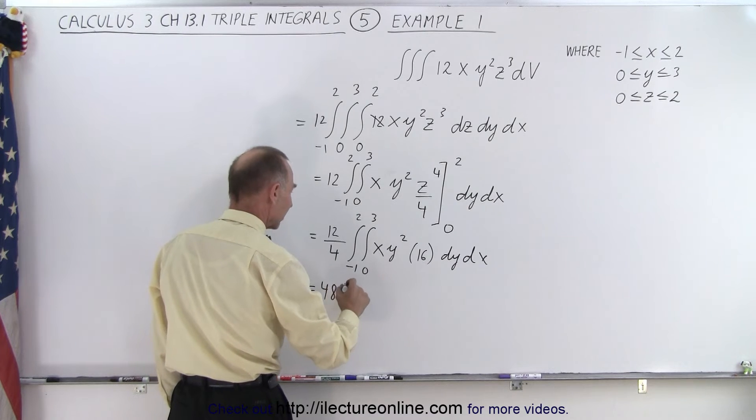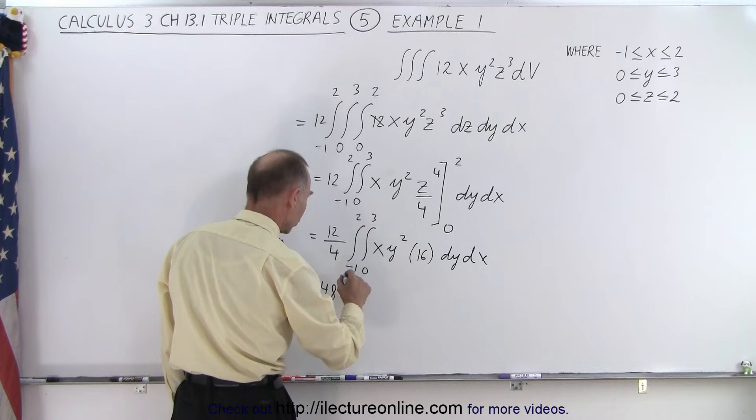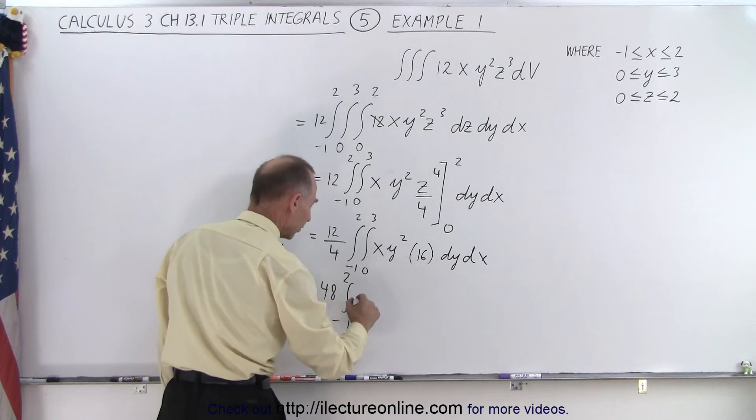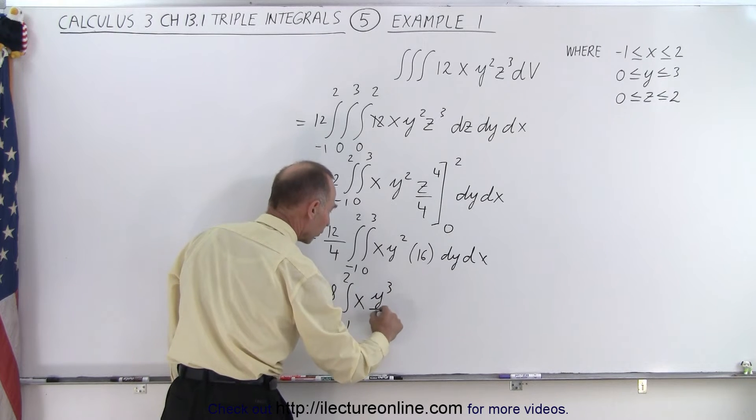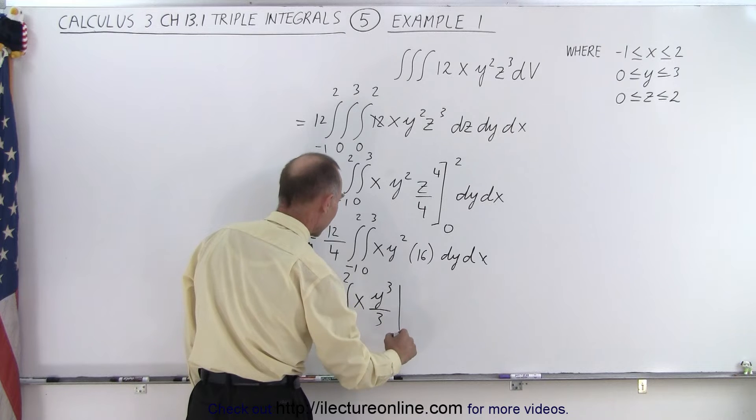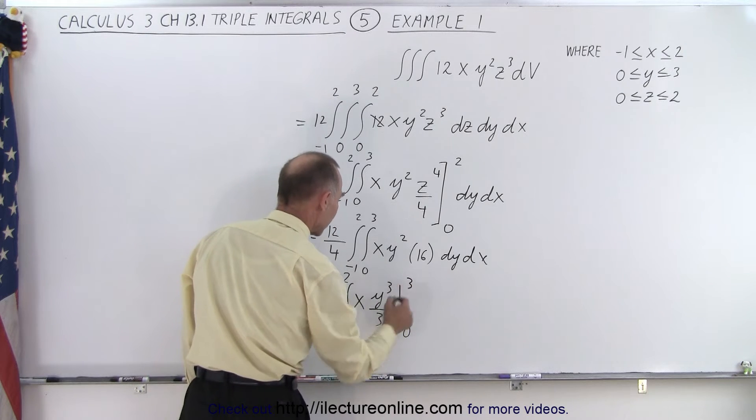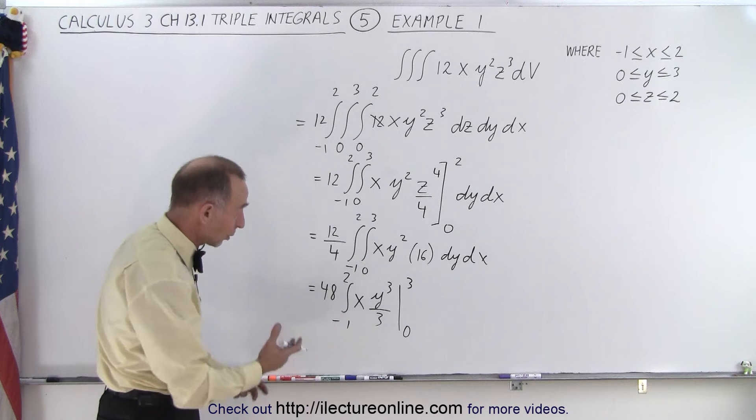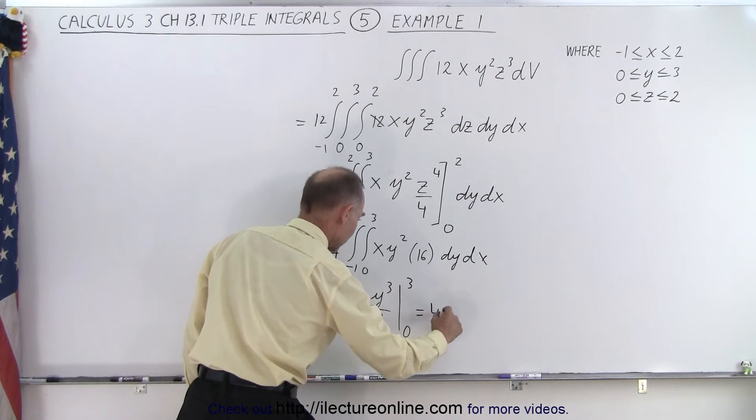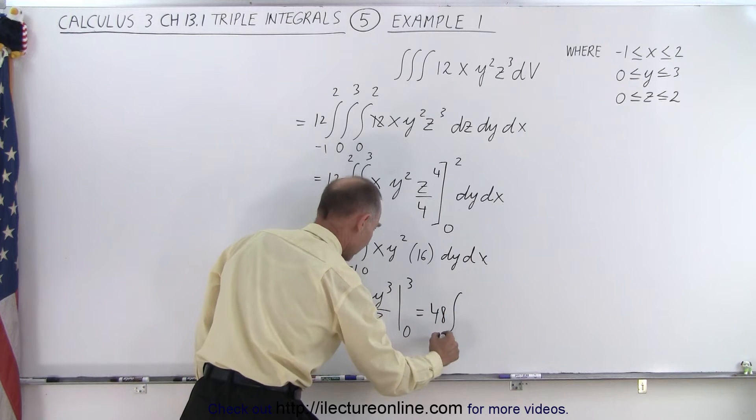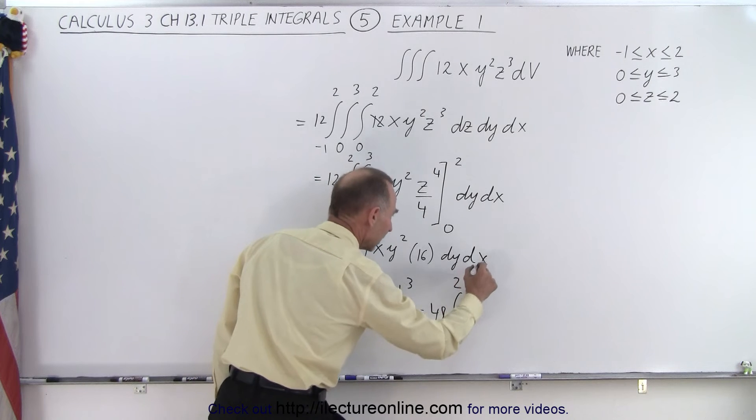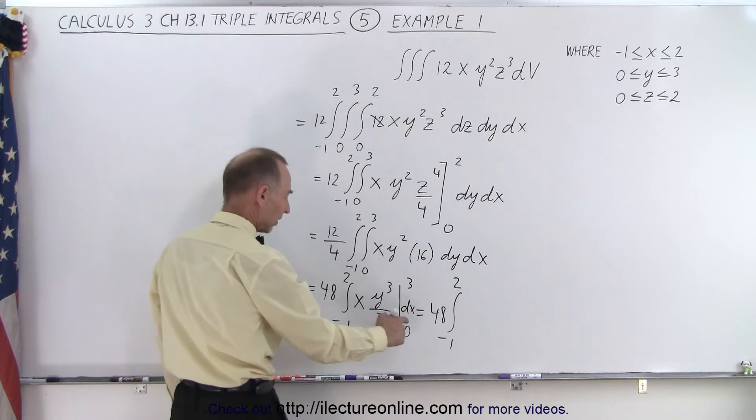So now we get 48 times the integral from -1 to 2, and now we're going to integrate y² dy. So this becomes x times y³ over 3, x remains constant, and we're going to evaluate that from 0 to 3. And again in this case when we plug in the lower limit we get nothing. Plug in the upper limit we get the following. So this is equal to 48 times the integral from -1 to 2—I can't forget my dx, I keep forgetting my differentials there because I still have the x here.